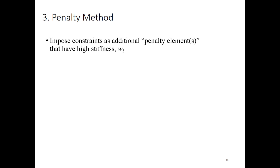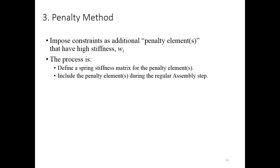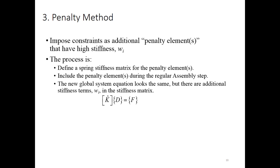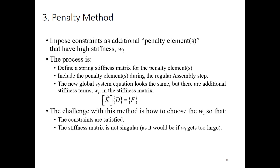Lastly, let me talk about the penalty method. The idea here is that we're going to impose the constraints as additional penalty elements that have a high stiffness. So we're not going to add a number of equations, but we're going to add new elements. The stiffness is Wi. The process is we're going to define a spring stiffness matrix for the penalty elements, and we're going to include those matrices during the regular assembly step. The new global system equation is the same, but there are now additional stiffness terms in the stiffness matrix. So we're going to put a k-carat for a new stiffness matrix with those additional terms added. The real challenge with using the penalty method is to balance the choice of these Wi terms, they're called weights, so that you satisfy the constraints, at least mostly satisfy the constraints, but at the same time, you don't have to put weights that are so high that it turns your stiffness matrix into a singular matrix. So it's a balance.